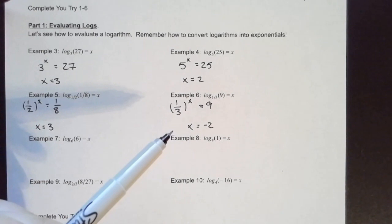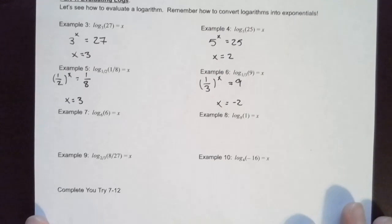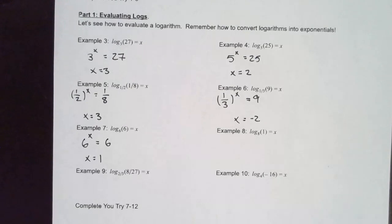I have to think about 3 to what power equals 9 — that's 3 squared. So 1/3 to the negative 2 power gives me 9. For example 7: 6 to what power equals 6? That's to the first power — raise anything to an exponent of 1 and your outcome will be the same.